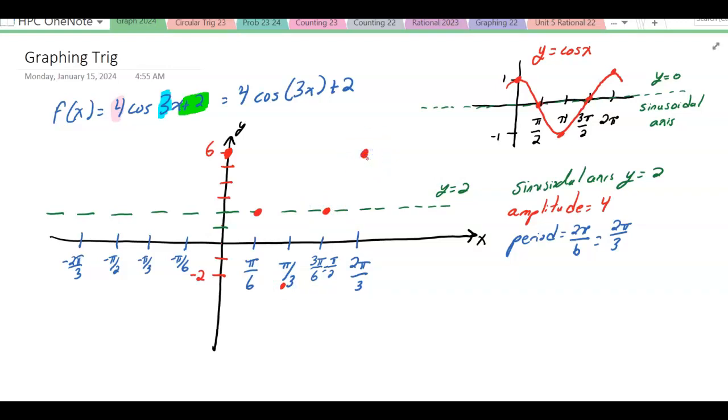Using the basic sine curve in the pattern, then at negative pi over 6, we're back on the sinusoidal axis. At negative pi over 3, down at negative 2. Back to the sinusoidal axis, and then back up to 6.